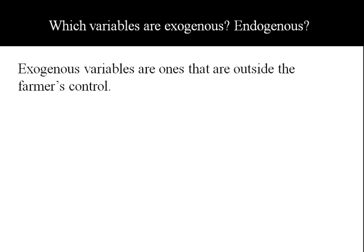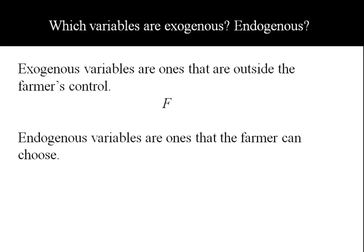Another thing we like to identify is which variables are exogenous and which are endogenous. Exogenous variables are outside of the farmer's control in this situation - that's the length of fence F. He's got F feet of fence lying around that he wants to use, which is beyond his control. What he can control are the endogenous variables: the length and width of his fence.